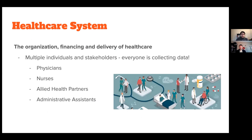The healthcare system is the organization, financing, and delivery of healthcare and medicine. There are multiple individuals and stakeholders — physicians, nurses, allied health partners like physiotherapists, occupational therapists, speech language pathologists, and administrative assistants — and every one of them is collecting data. This comes in handy for AI, because AI needs data. Different types of data are being collected across all these stakeholders.